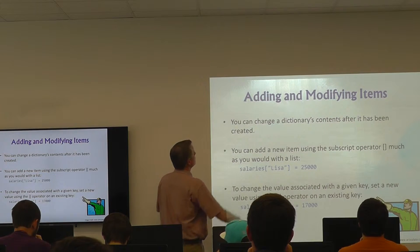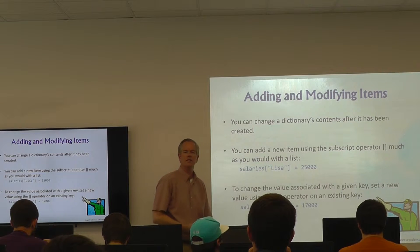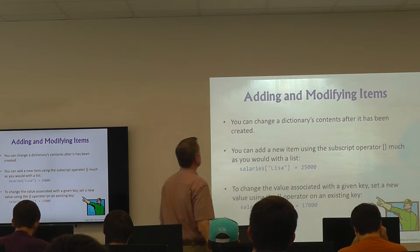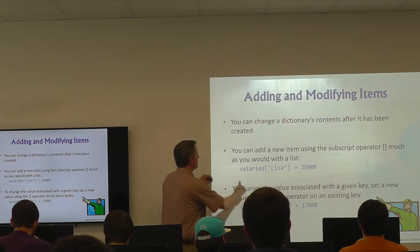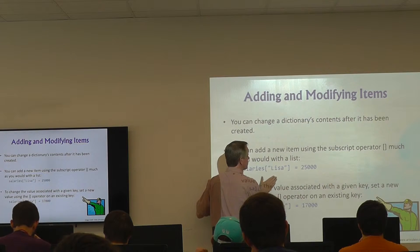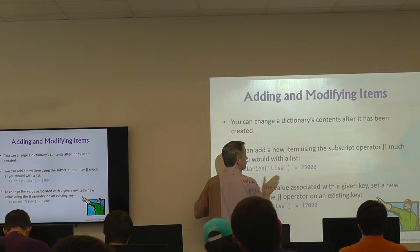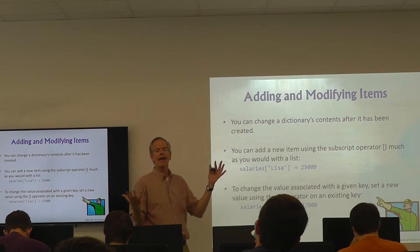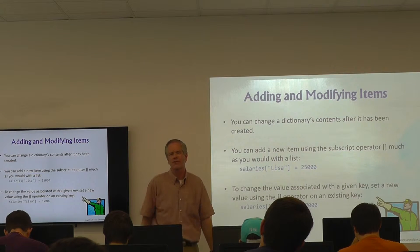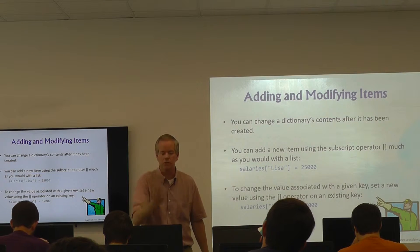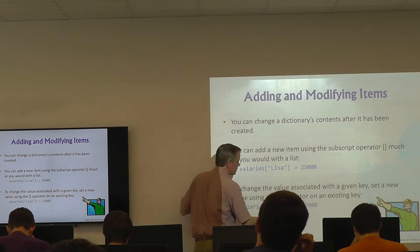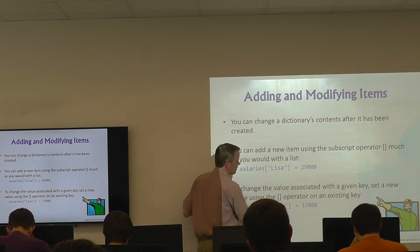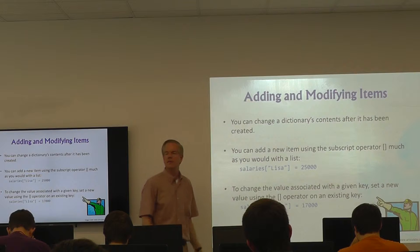You can change a dictionary's contents after it's been created — this is not carving things in stone. You can stick something new into a dictionary: `salaries['Lisa'] = 25000` adds a new entry for Lisa making $25,000. If you need to update it — say Lisa is actually making $17,000 — you just say `salaries['Lisa'] = 17000`, which updates the value. Now when you look up using the key Lisa, $17,000 is returned.